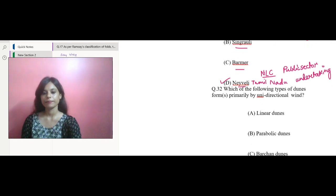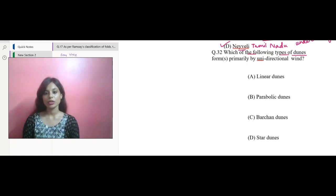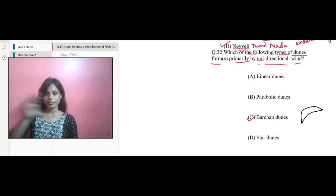Let's move to the next question. Which of the following types of dunes forms primarily by unidirectional wind? Your answer would be Barchan dunes. Barchan dunes are crescent-shaped dunes that form when the wind blows predominantly from one direction. The horns of the crescent point downward and the dune moves in the direction of the horns, like the way I have shown it over here. Towards the horns it will move.